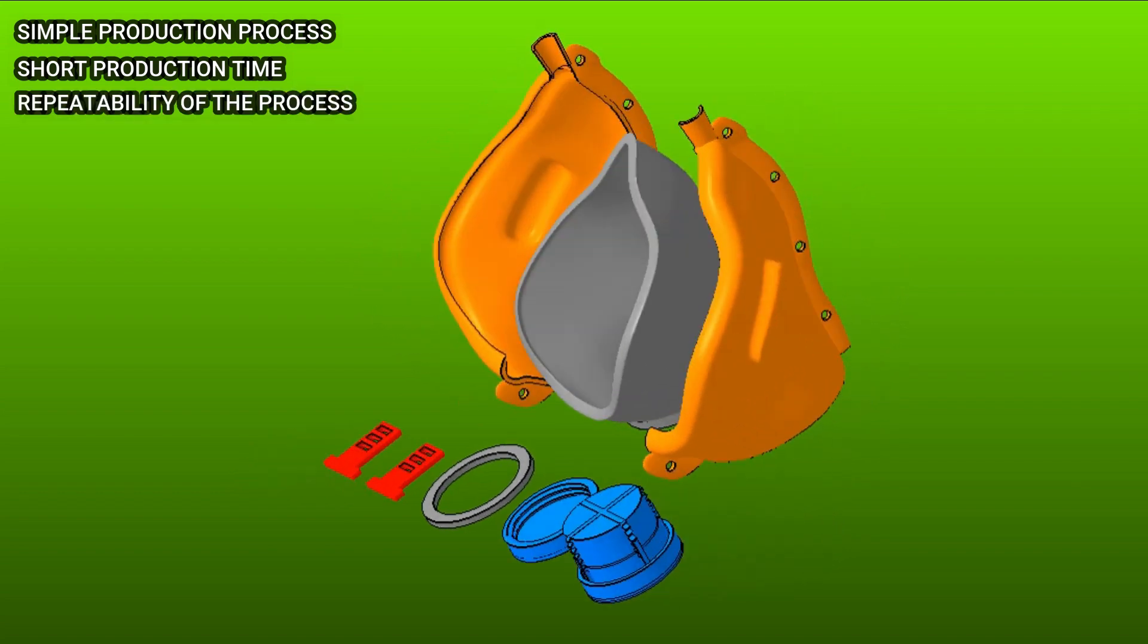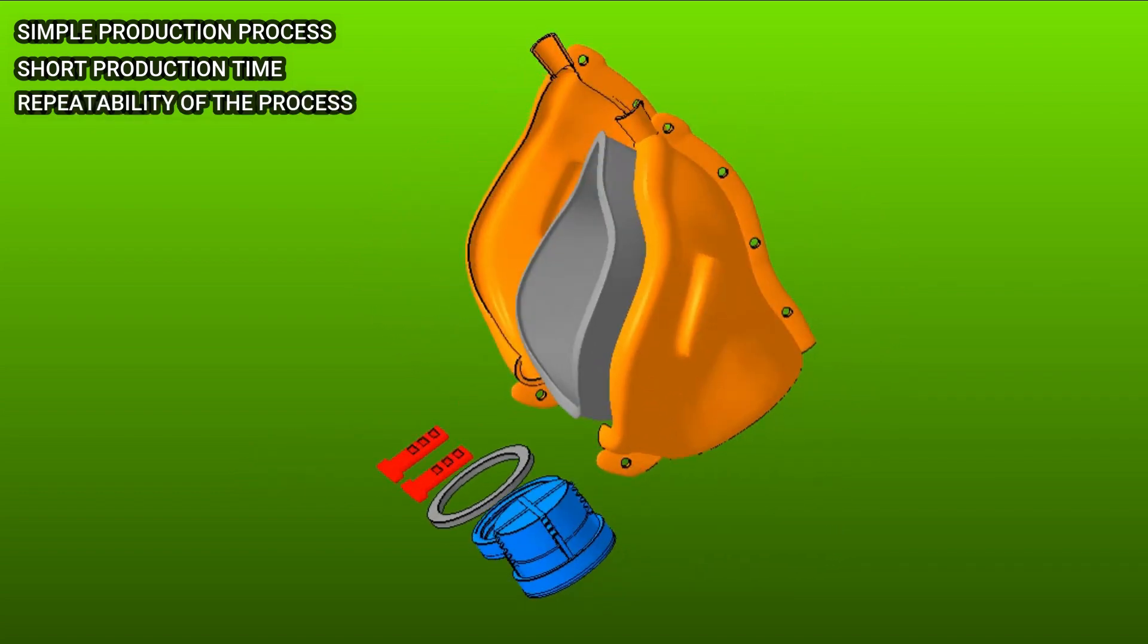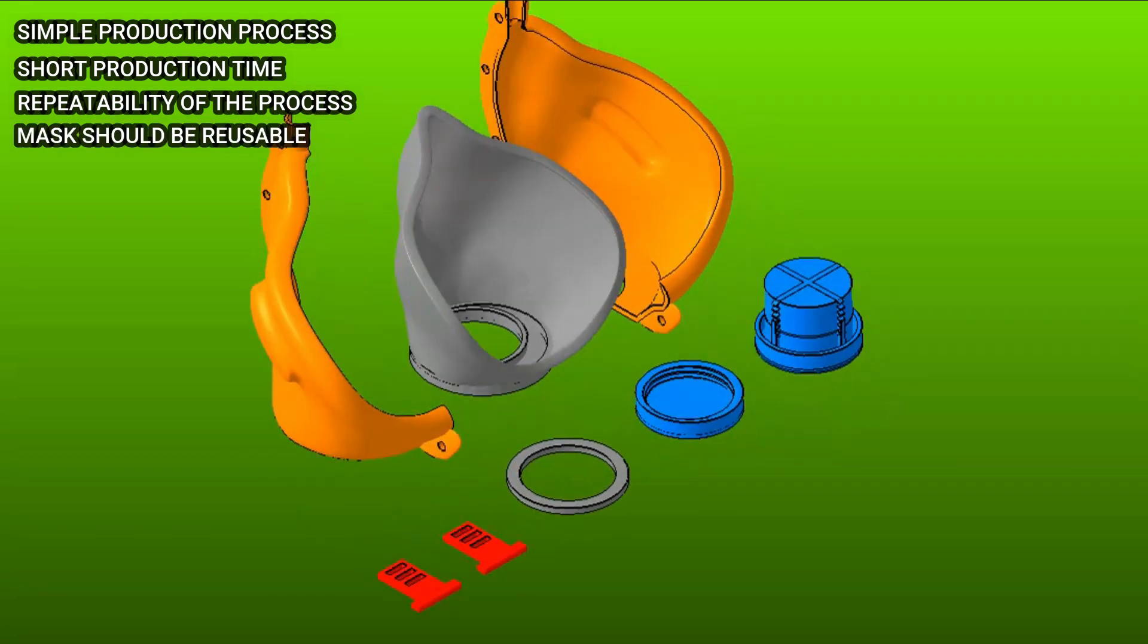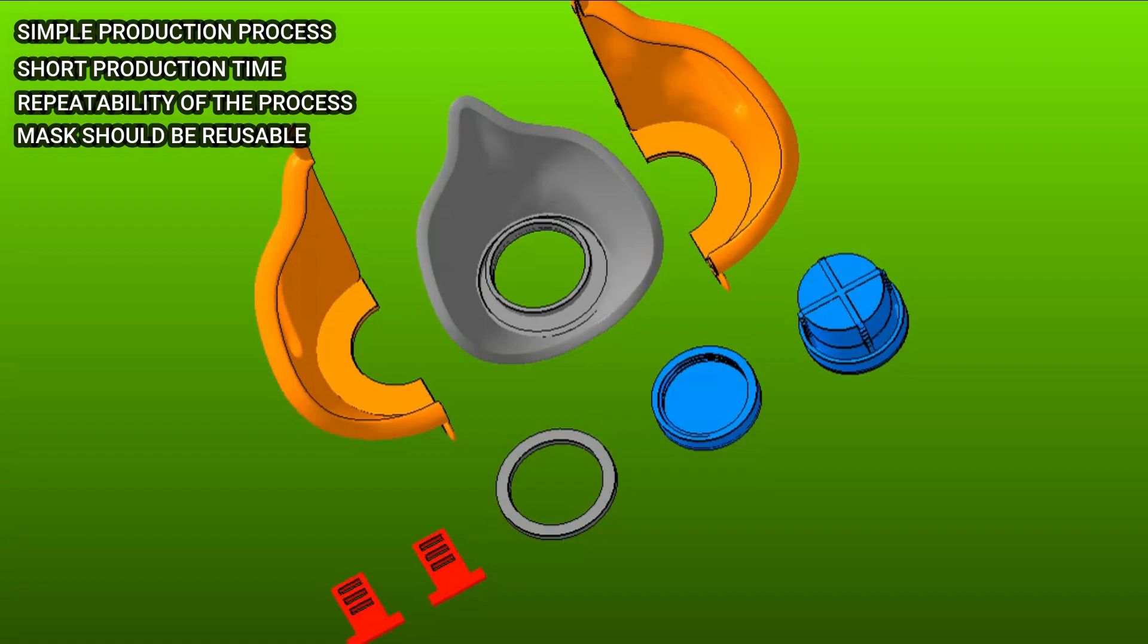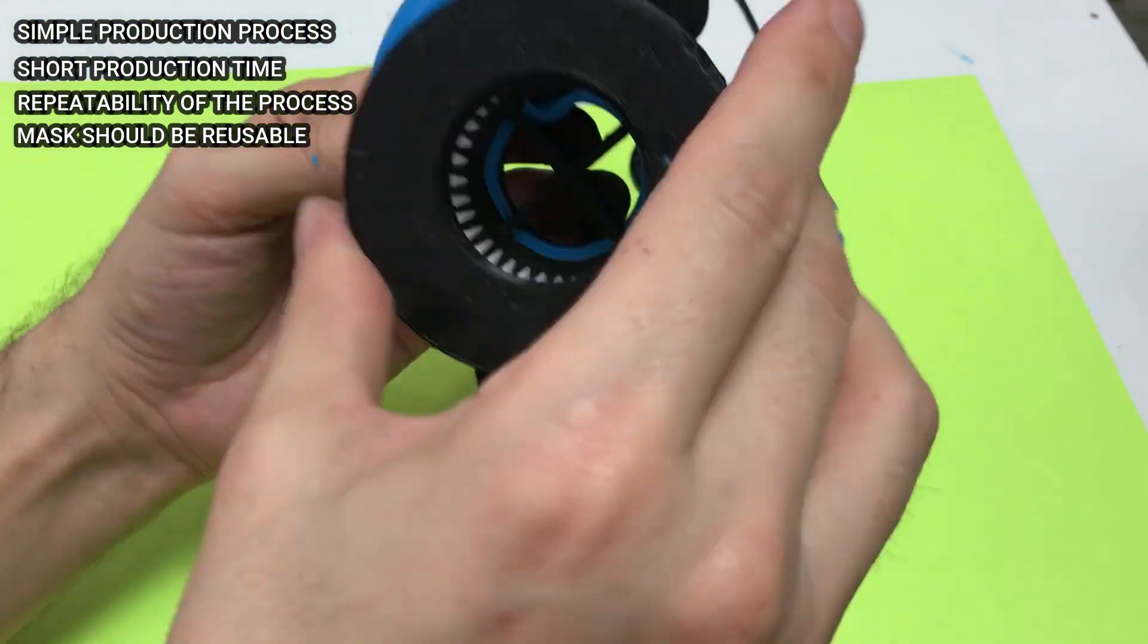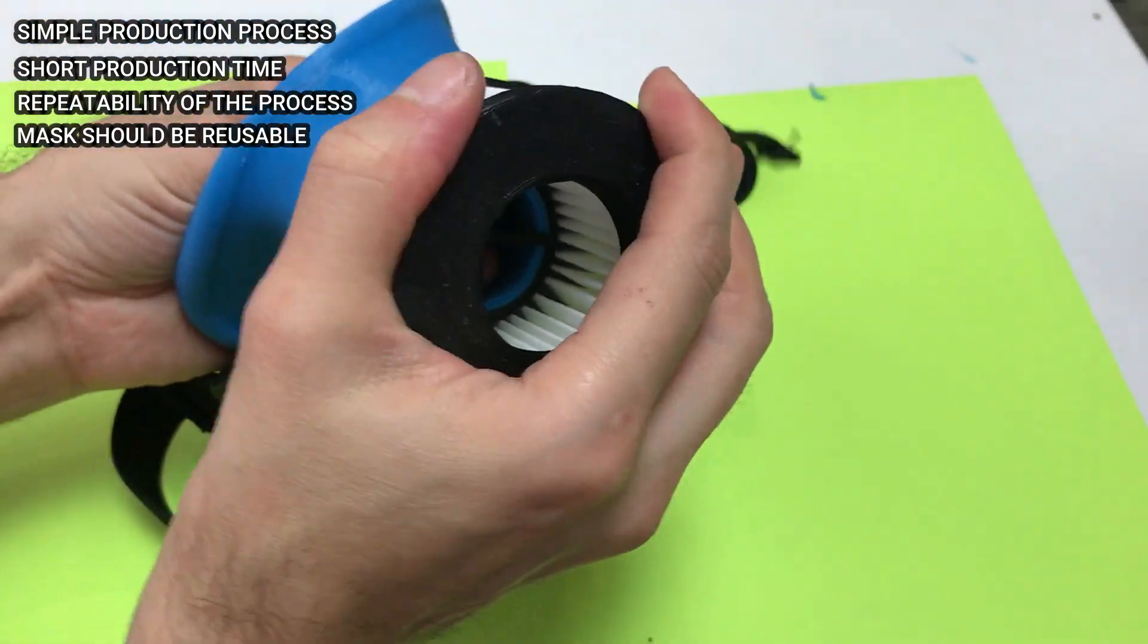Repeatability of the process. One mold can be used for as many masks as you please with the same results. Masks should be reusable. Silicone can be sterilized and reused and the filter can also be sterilized with UV lights and used for three to six months before changing it.